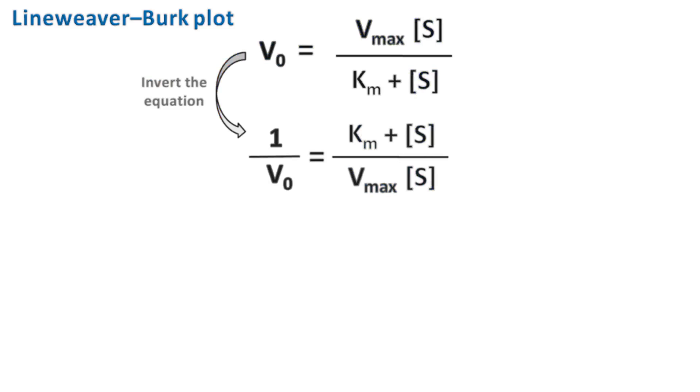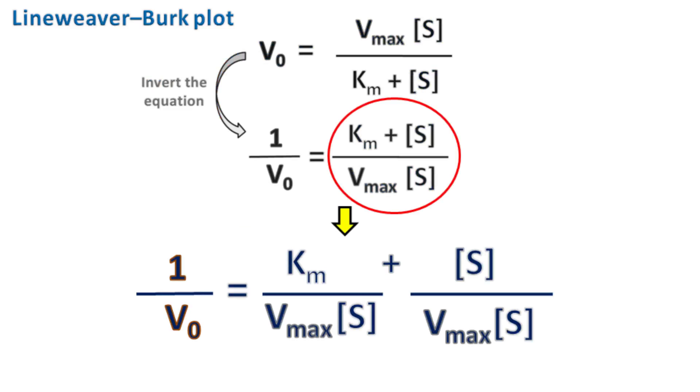Let's modify the term on right-hand side. What we get is 1 upon V0 is equal to Km upon Vmax into S plus 1 upon Vmax.